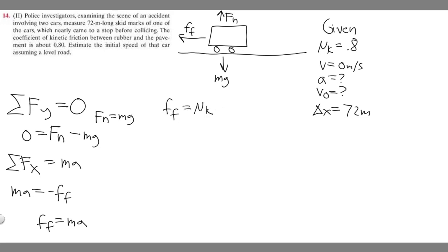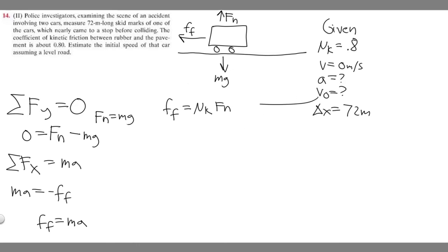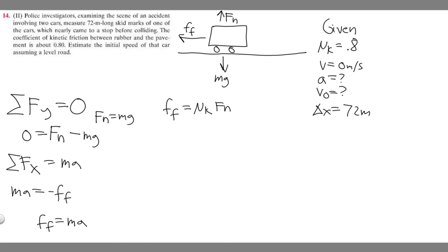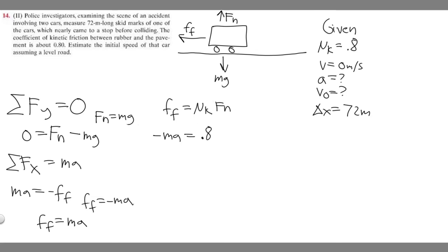The key formula for this problem is: force of friction equals mu sub k times F sub n. Substituting what we solved — F sub f equals negative ma, and F sub n equals mg — we get negative ma equals 0.8 times mg. Notice the masses cancel, leaving negative a equals 0.8 times g.